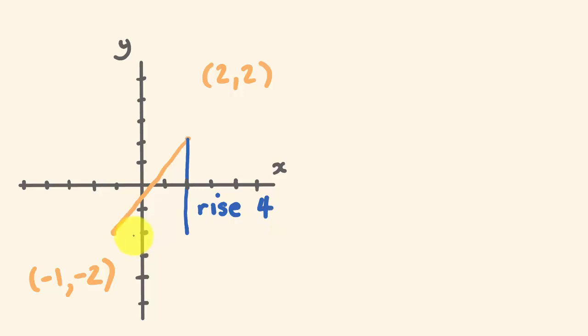The second thing we need to work out is how far across have we gone from one point to the other. So we've gone from -1 to 2. So from here to here, this is our run. And you can see from -1 to 2, we've gone across 3. And we're going to use these to work out how far this particular distance is.